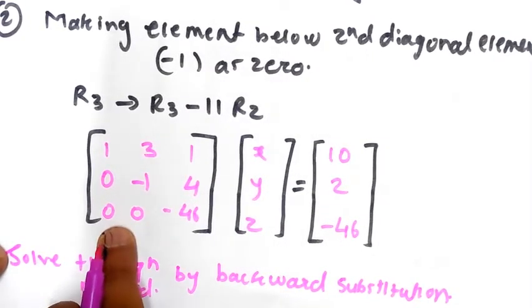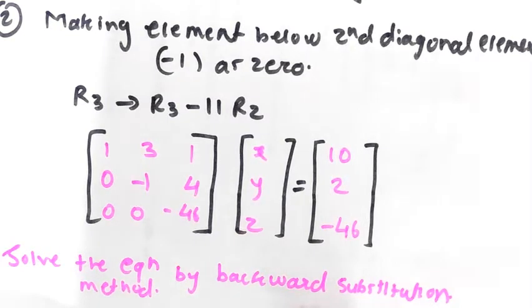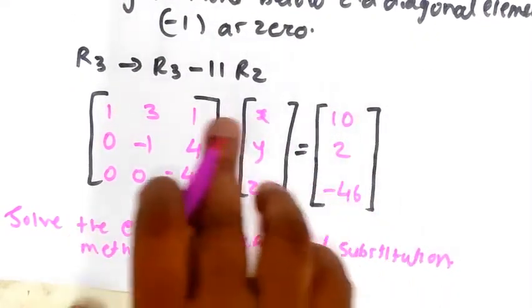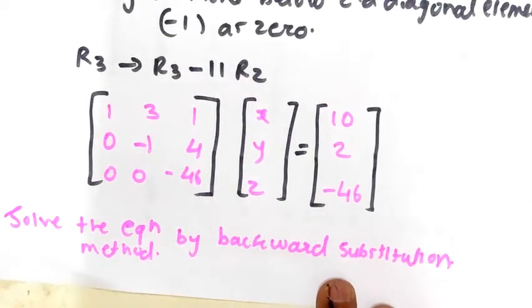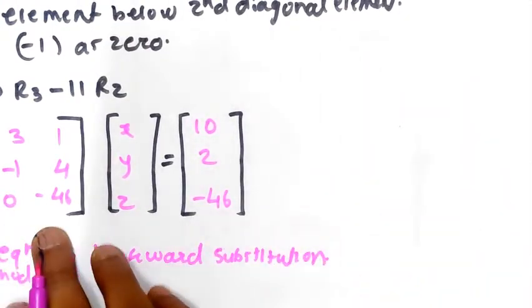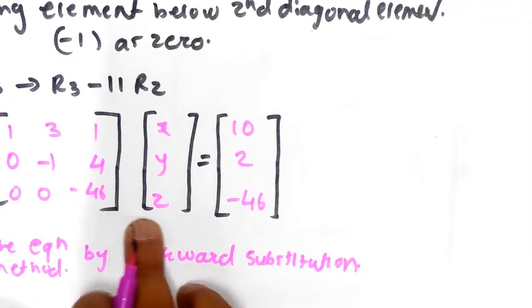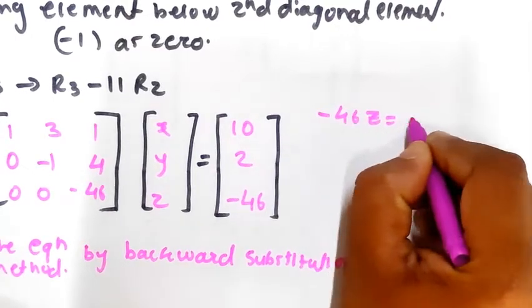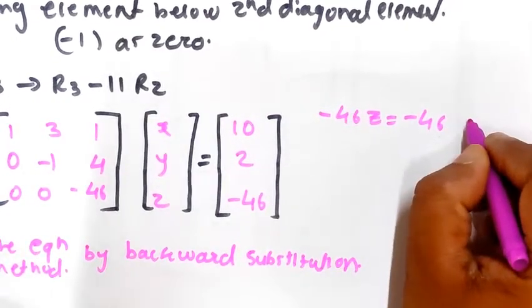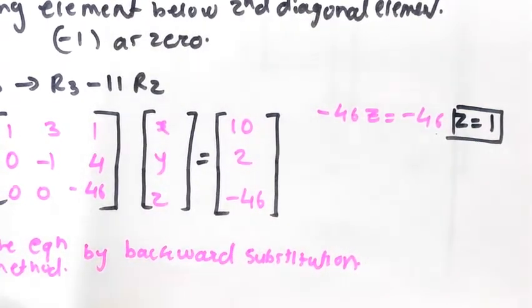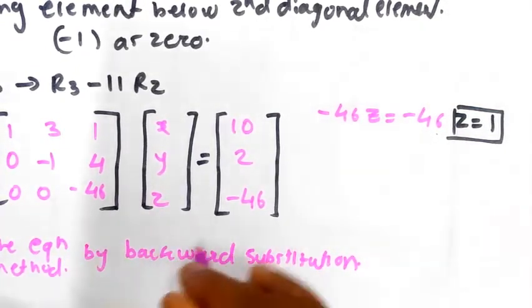Now you have to apply the backward substitution method. Convert the matrix back to equation form. From the last equation: -46z = -46, so z = 1.